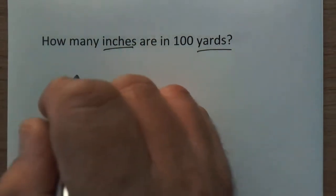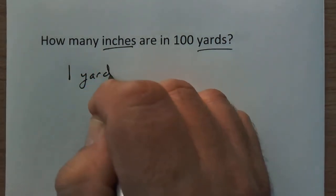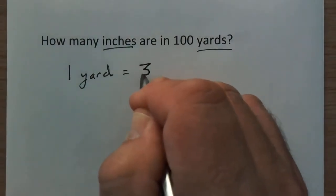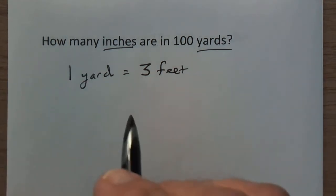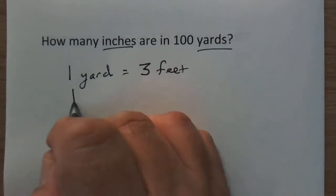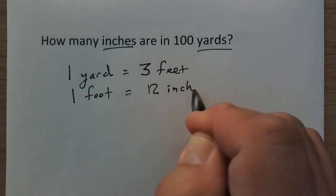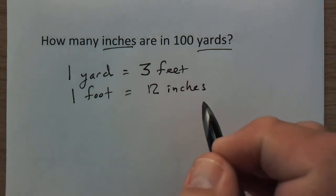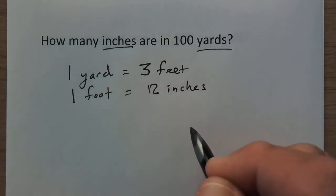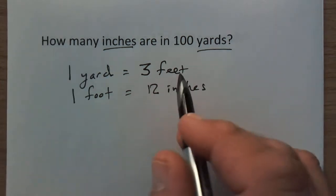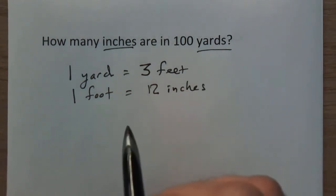Let's mark down the relevant conversion factors. We have one yard equals three feet — that's one conversion factor. Another one: one foot equals twelve inches. These are some you should memorize; many of you already know them, but if not, take some time to do so because you'll work quicker. So these are the conversion factors we're going to need — we've got yards, inches, and feet — everything we need right here.